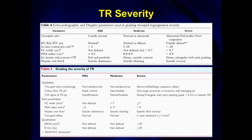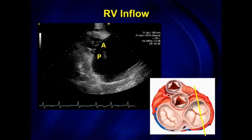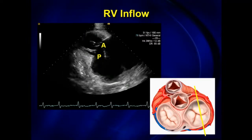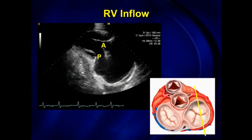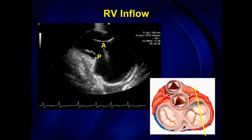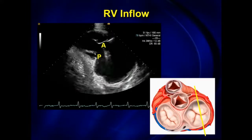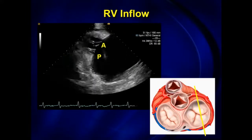In the interest of time, I'm not going to go through tricuspid grading of severity. There are ASE and European guidelines that align well. I'm going to focus on the anatomy and the views. We'll start with transthoracic. Sometimes with these procedures you actually have to use transthoracic imaging because your TEE imaging is not going to be adequate.